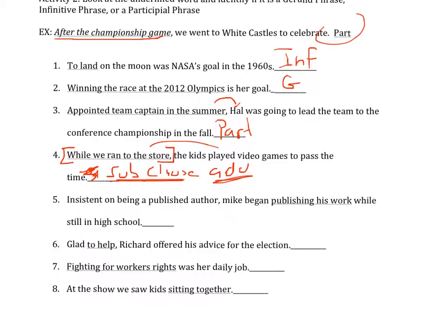Did you get that one? If you didn't, don't worry about it. Moving on — number five: 'publishing his own work' is a gerund. 'Glad to help' — 'to help' is an infinitive phrase; pretty easy to spot those. Number seven: 'fighting for workers' rights' is a gerund — it's the subject of the sentence, it's a noun. Then at the show, we saw kids sitting together — the kids were sitting together, modifying a noun. It's a participle phrase.